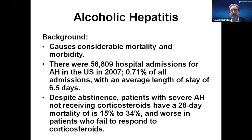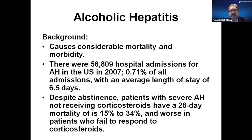Alcoholic hepatitis causes considerable mortality and morbidity. It's probably closer to 70,000 hospital admissions in the U.S. with an average length of stay of close to a week. Patients with severe alcoholic hepatitis who do not receive steroids have a one-month mortality of close to 35%. If you don't respond to steroids, you have a very poor prognosis. That's a group of patients where we now think about liver transplant.